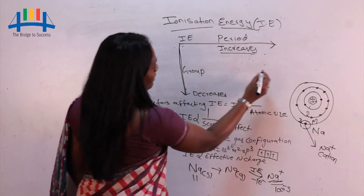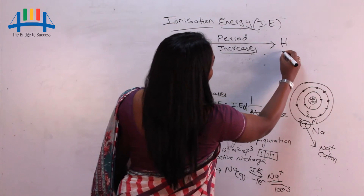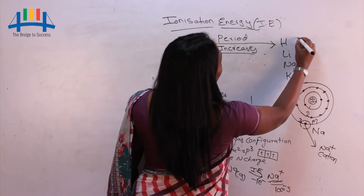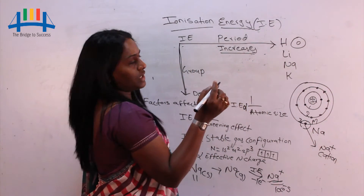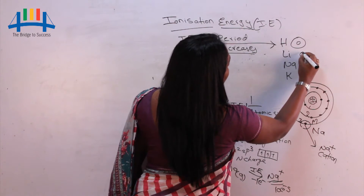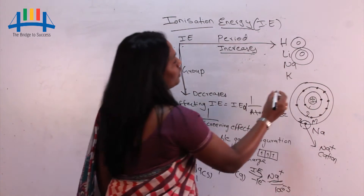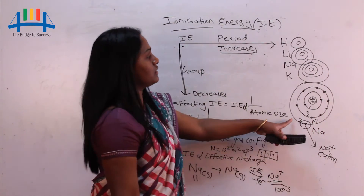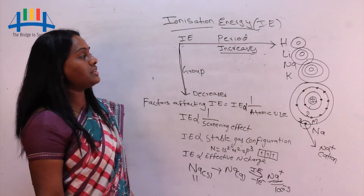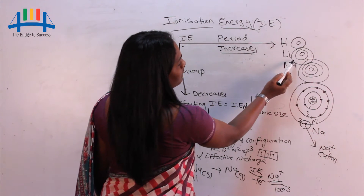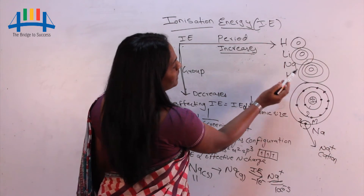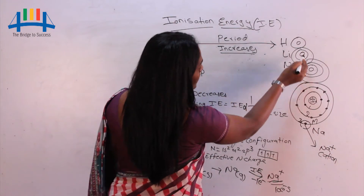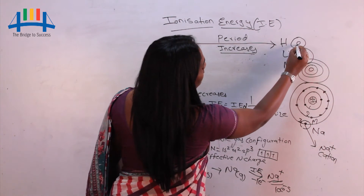The first factor is atomic size. Consider the Group 1 elements: hydrogen has its electron in the first shell; lithium has its outermost electron in the second shell (1s² 2s¹); sodium has its outermost electron in the third shell; and potassium has its outermost electron in the fourth shell. Going down the group, the distance between the nucleus and outermost shell is increasing.